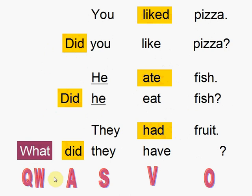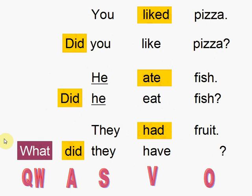So again, you see the structure here. We begin with the auxiliary 'did', then you have the subject — you, he, or they — and after that we have the verb in the base form: have, eat, like. The verb goes back to the base form because we use the auxiliary. In some cases we have information, and the answer would be yes or no. If we don't have that information, we need a question word to find it. So this is the end of this clip.